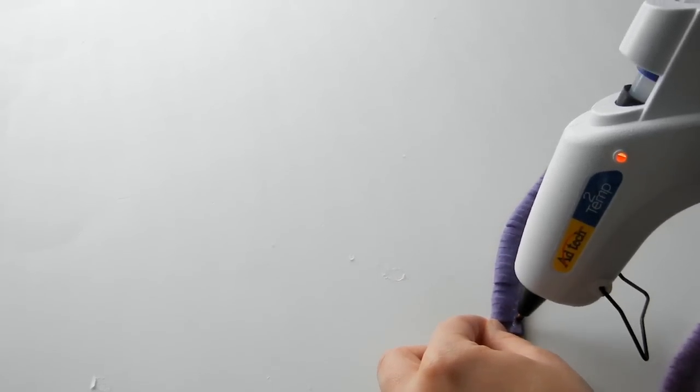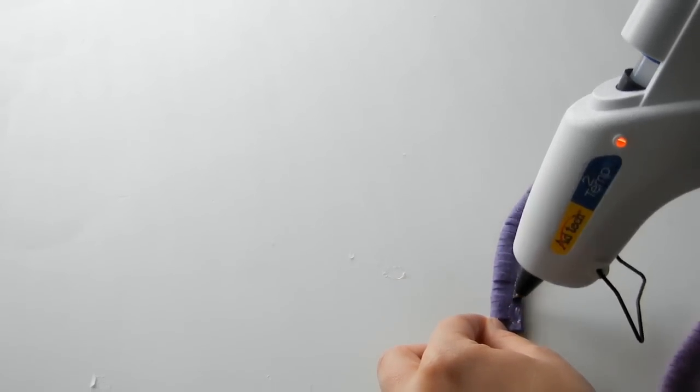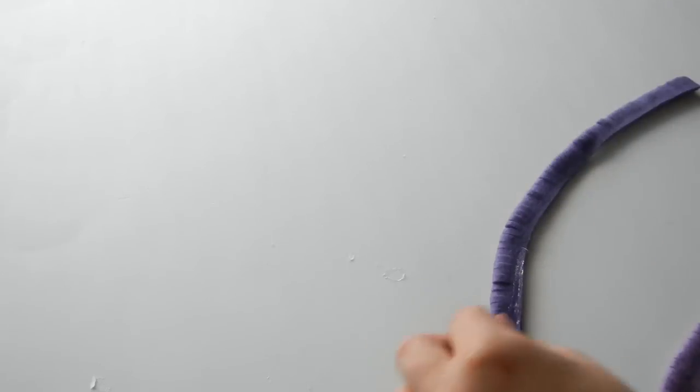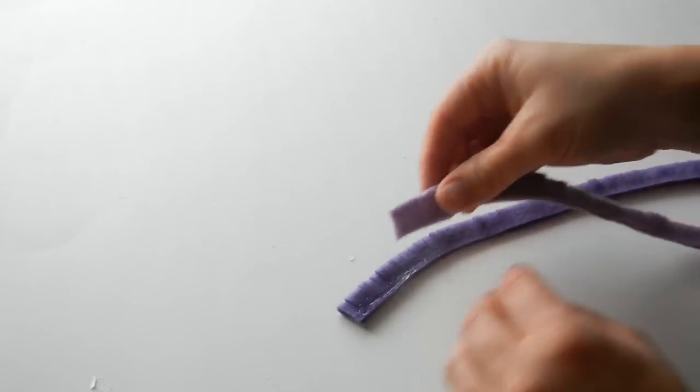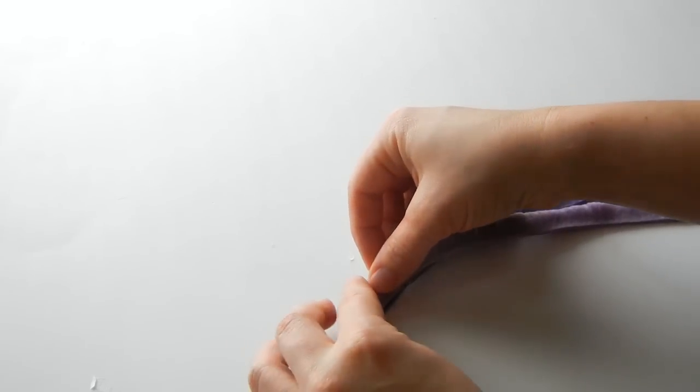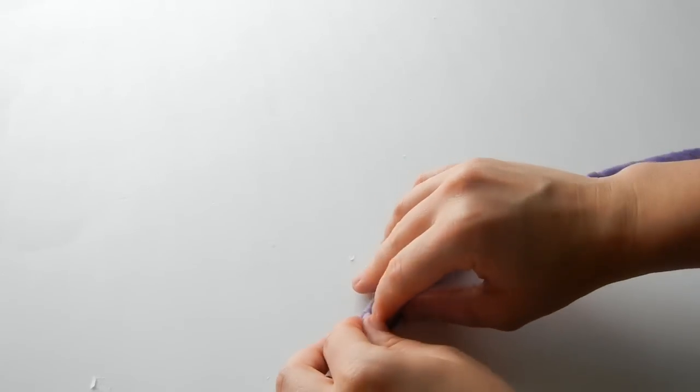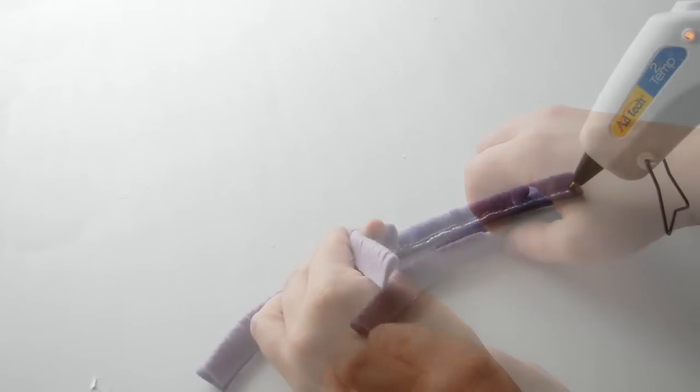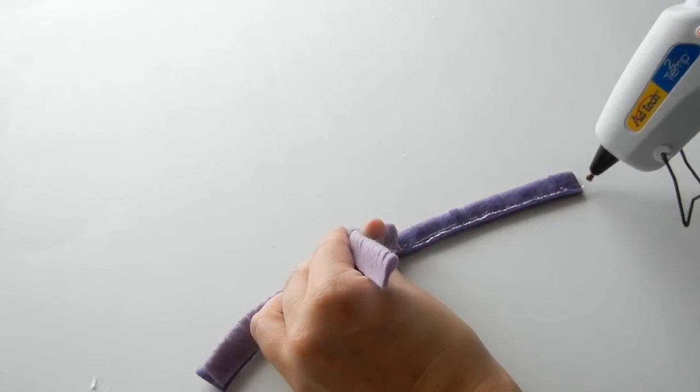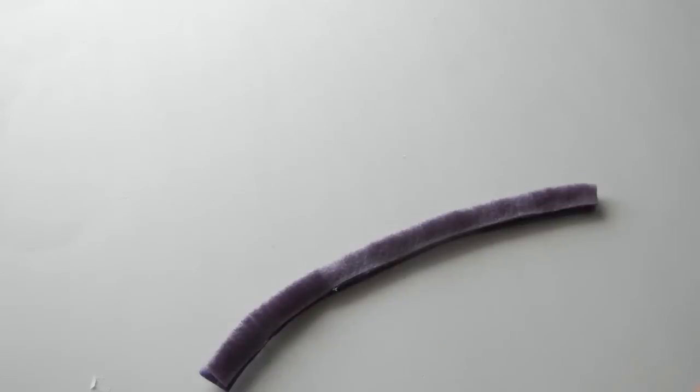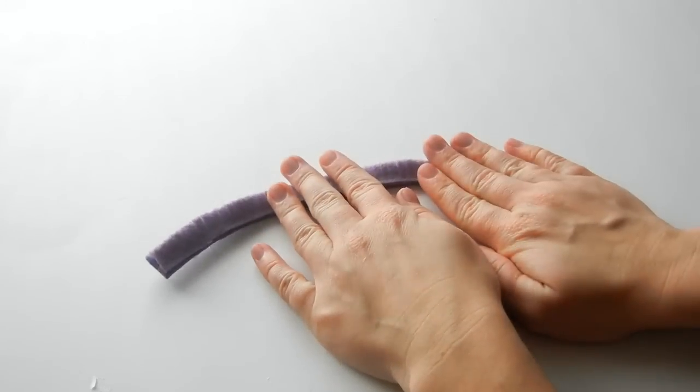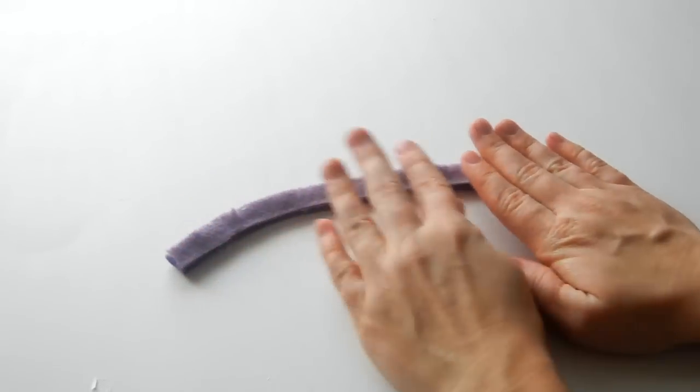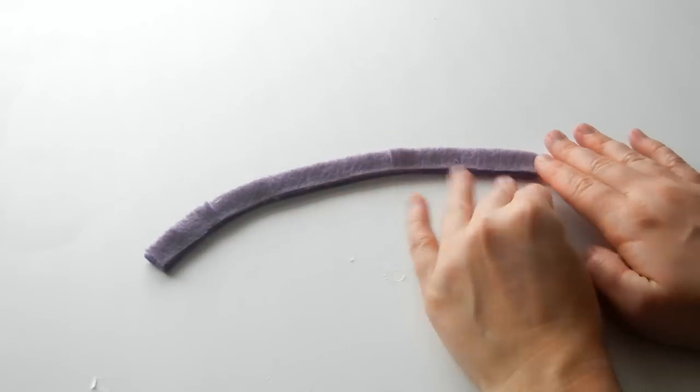we're just going to glue these together. Take hot glue and put it on one color and glue the other color on. Then let that cool and do the same thing with rolling it as we did with the pink one.